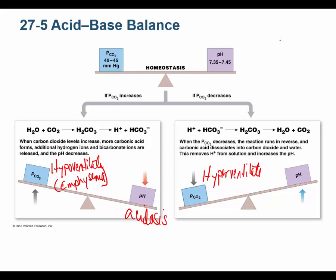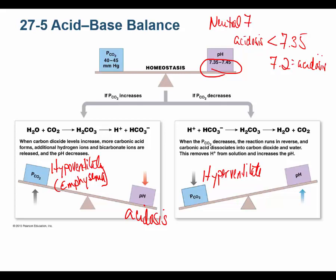Normal pH is 7.35 to 7.45, and that's slightly alkaline because neutral is 7. Our normal pH is slightly alkaline. However, because normal is 7.35 to 7.45, anything less than 7.35 is called acidosis. You might say 7.2 is acidosis? Yes — it's actually above neutral, but it's less than normal, so it's acidosis. Anything greater than 7.45 is alkalosis.